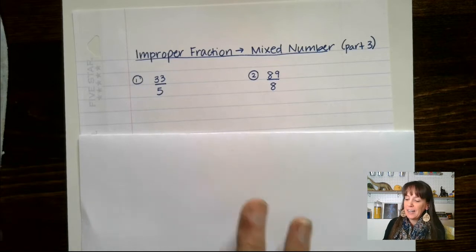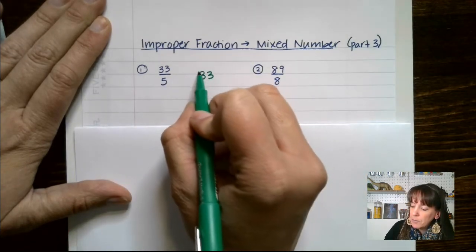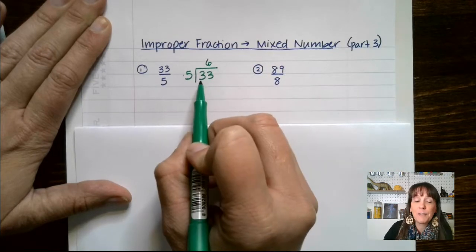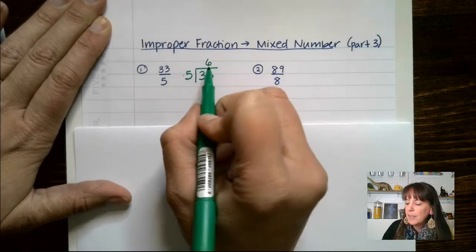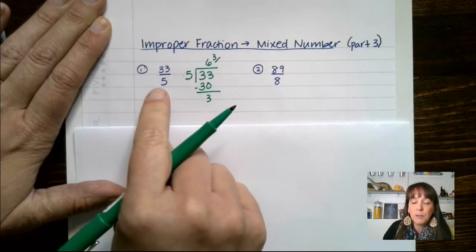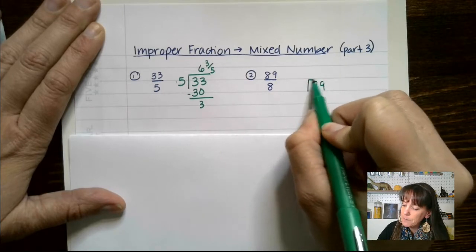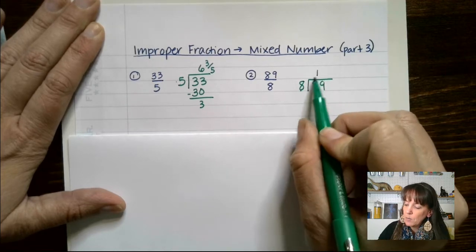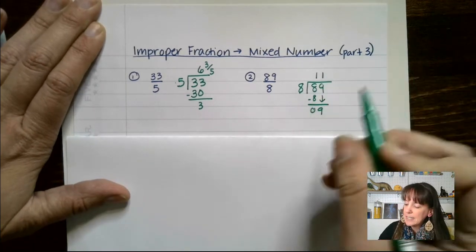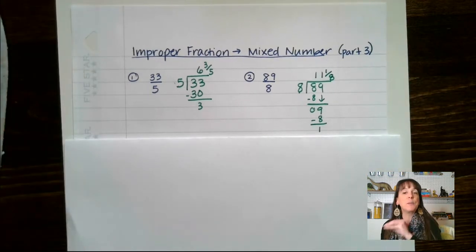Now let's do the reverse — going from an improper fraction to a mixed number. The best way is to divide. We put 33 under our division and do 5 into 33, which goes 6 times. 6 times 5 is 30; subtract and we get a remainder of 3. So we put 3 over our denominator: 6 and 3 fifths. For 89 over 8: 8 goes into 8 one time, 8 goes into 9 one time with a remainder of 1. So we get 11 and 1 eighth.